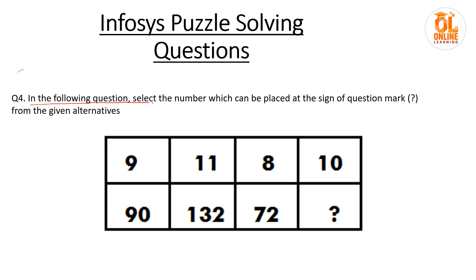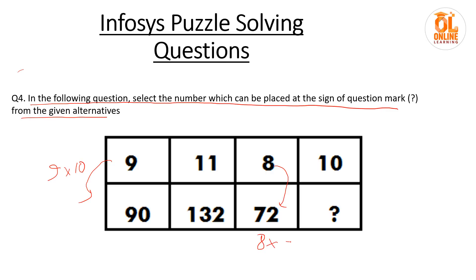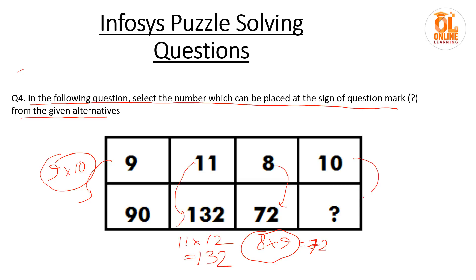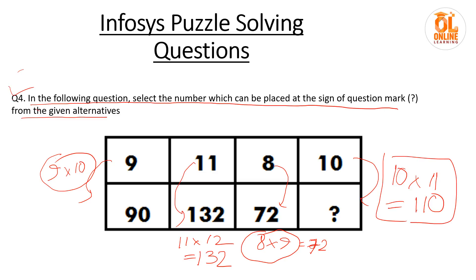In the following question, select the number which can be placed at the sign of the question mark from the given alternatives. Again you need to find the trick. You can see it is 90, and you can analyze that 9 and 10 can become 90, and you also know 8 and 9 is 72. The difference between 9 and 10 is 1, and 8 and 9 is also 1. So try 11 and 12 — yes, 11 and 12 is 132. Then it should be 10 into 11, that is 110. Your answer will be 110.